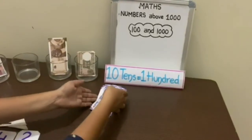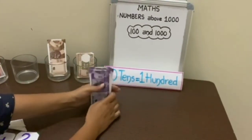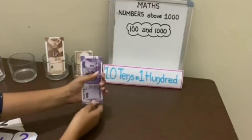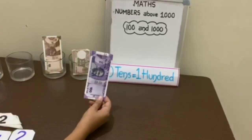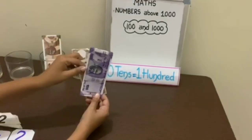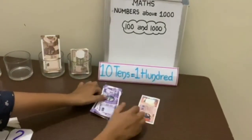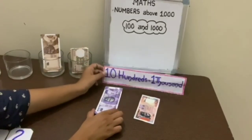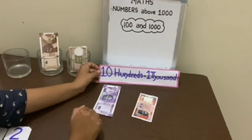So 10 notes of 100 are equal to 1000. Instead of taking these 10 notes, we will take 1 thousand rupee note. Which means 10 hundreds are equal to 1000.